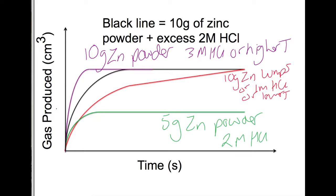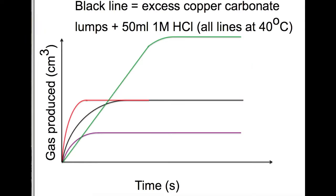Let's have a look at another example. In this example we have reversed the situation so we've got excess copper carbonate which means that it won't all react and 50ml of 1M HCl so that will all react as it's not in excess. And it states in this question that all lines are at 40°C so you know that we haven't made any changes to the temperature. So again the black line is the basic reaction there so you can see the curve and then finishing off here.